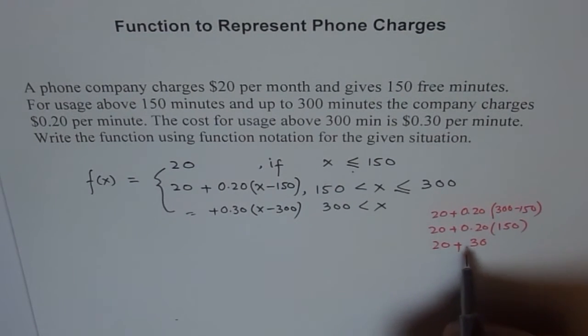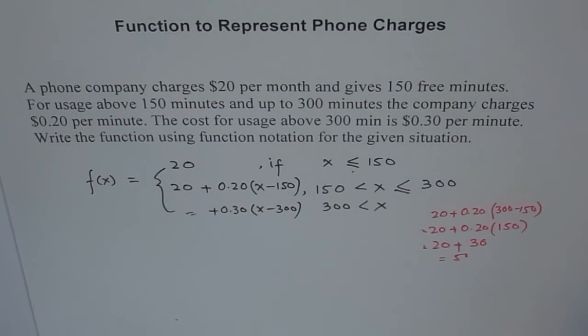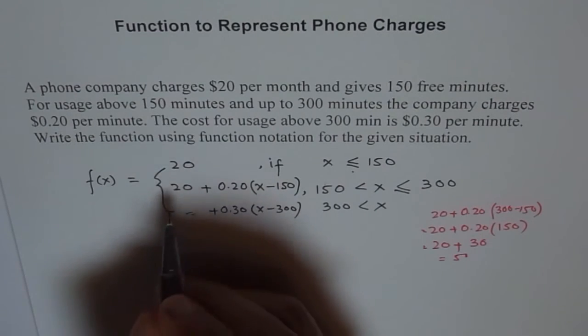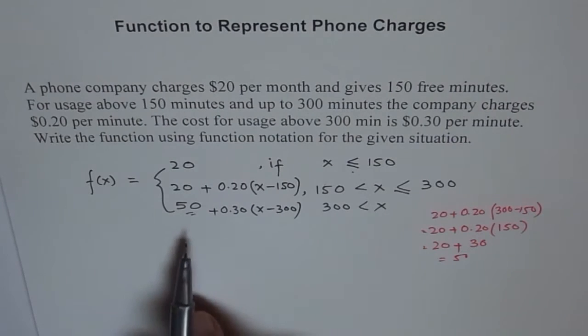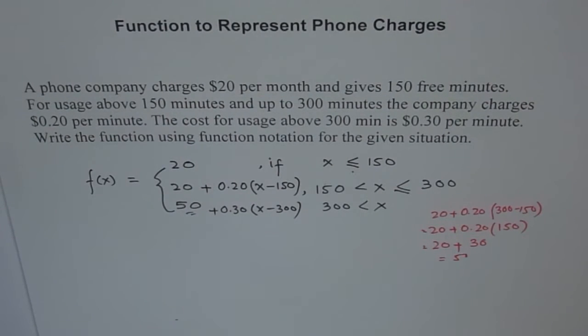So 20 plus 30 is 50. So this is $50, so we will write here 50. So it will be 50 plus 30 cents over 300. I hope you understand how I am developing this equation.